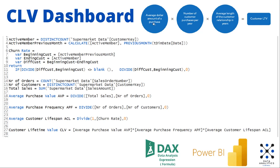Now we arrive at the first member of the formula: the average purchase value, which is the division between total sales and the number of orders. The second member of the formula is the average purchase frequency, which is a division between the number of orders and the number of customers. And the third one, average customer lifespan, is the reverse of the churn rate — it's 1 divided by the churn rate.